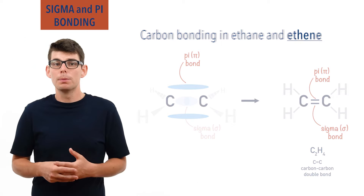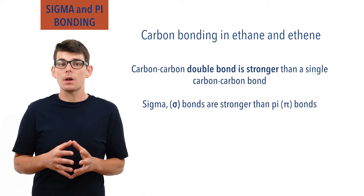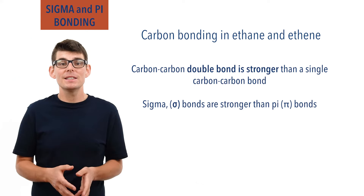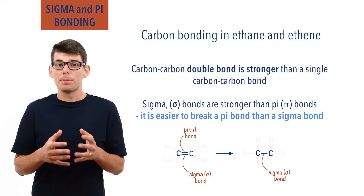As the carbon atoms are held by two bonds, a carbon-carbon double bond is stronger and harder to break than a single carbon bond. Sigma bonds are stronger than pi bonds however, meaning that a carbon-carbon double bond isn't twice as strong as a carbon-carbon single bond. It is easier to break a pi bond than a sigma bond. This gives ethene a higher reactivity than ethane and explains why alkenes are more reactive than alkanes. If a pi bond is broken, the sigma bond between the atoms still remains.